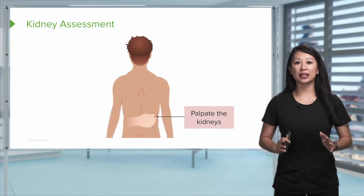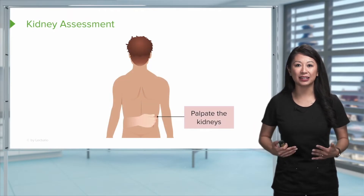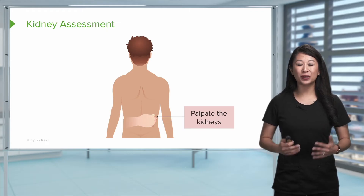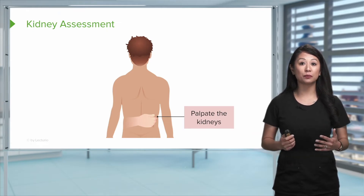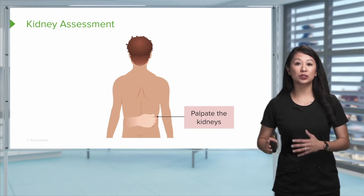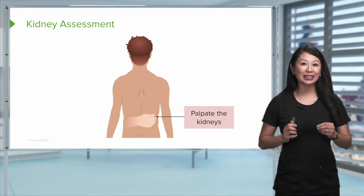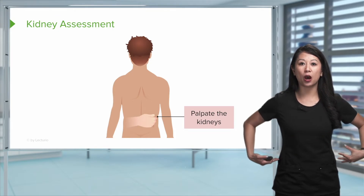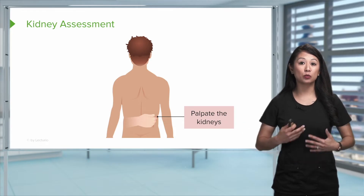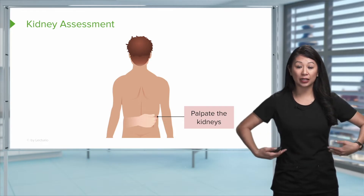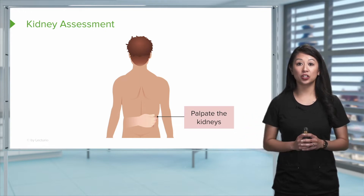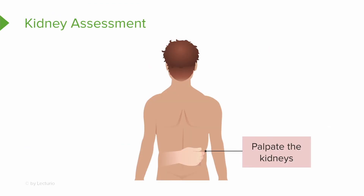Here's something to think about when palpating the kidneys. You may not do this so much as a nurse, but it is a common practice in assessment. Especially for someone who has a kidney infection, they may be really sensitive to having their flanks palpated. Sometimes a UTI or a kidney infection can radiate to the flanks or the back of the patient. If the kidneys are inflamed or if there's an infection suspected, you can gently palpate these areas to see if there's any pain.